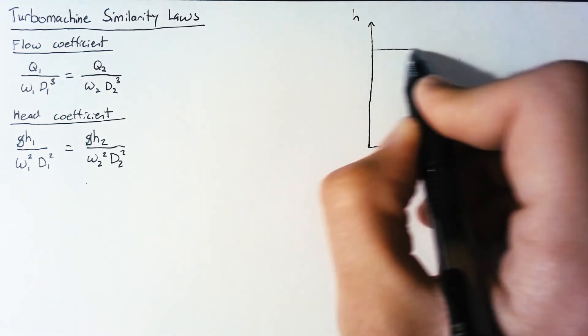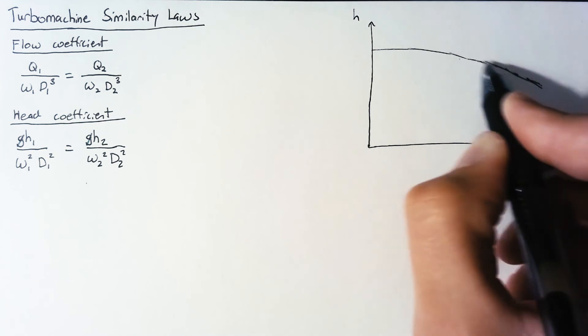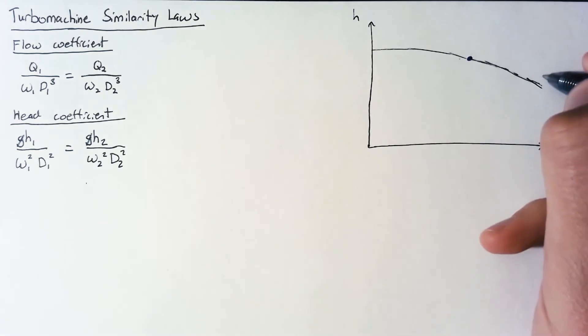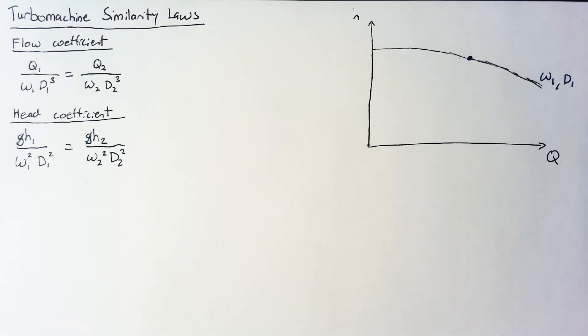In order to investigate that, let's draw a little sample pump curve and then investigate a single point on that pump curve. So this pump is operating at some omega 1 and the pump impeller has some diameter. We could change either these values and our pump curve would change.